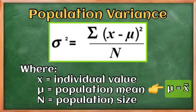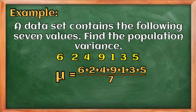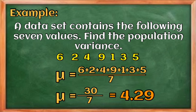Let us have this example: a data set contains the following seven values — find the population variance. The first thing we need to do is find the mean. The mean is the summation of all data values divided by the population size. We have 6 + 2 + 4 + 9 + 1 + 3 + 5 = 30, divided by 7, so our mean is equal to 4.29.